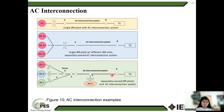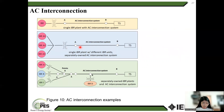The figure shows various interconnection configurations, including AC interconnection. A single IBR plan is interconnected to the transmission system by an AC interconnection system. In one configuration, the IBR plan and AC interconnection are both owned by the same entity. In another, multiple IBR plans from different manufacturers are interconnected to the transmission system. There is also a configuration where a separate IBR plan is interconnected to the transmission system via an AC interconnection system owned by a different entity from the IBR owner. Point A and Point B indicate the AC interconnection system regardless of ownership.